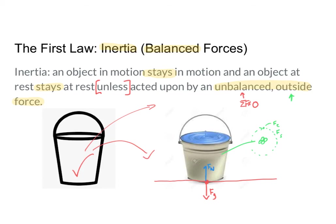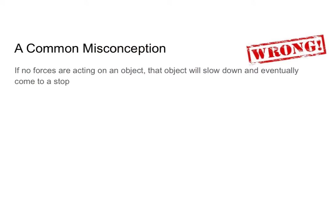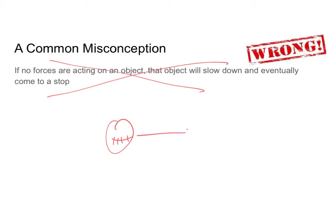So that is Newton's first law. One common misconception is that if no forces are acting on an object, that object will eventually slow down and come to a stop. This is wrong — if there are no forces acting on an object, that object is going to continue moving with constant motion. If I throw my baseball in space, it is going to continue to move with a constant velocity unless somebody decides to catch it.